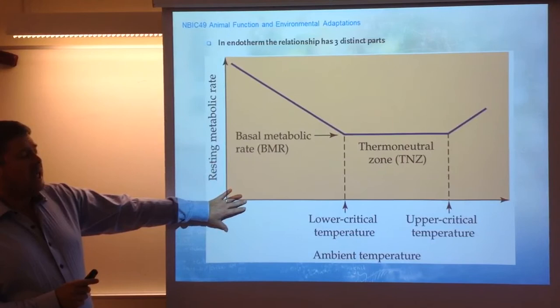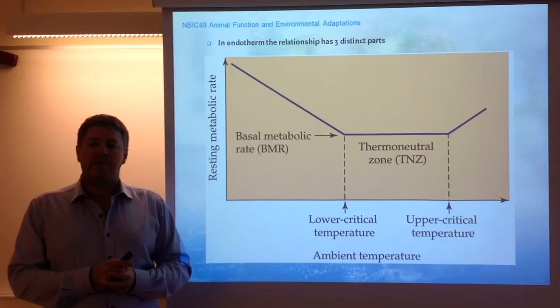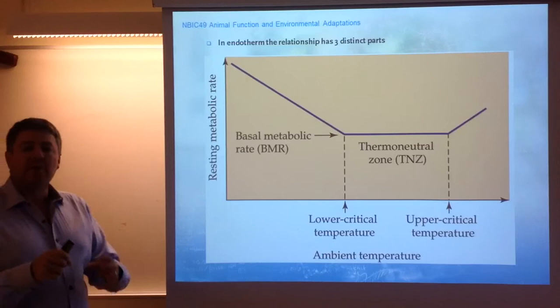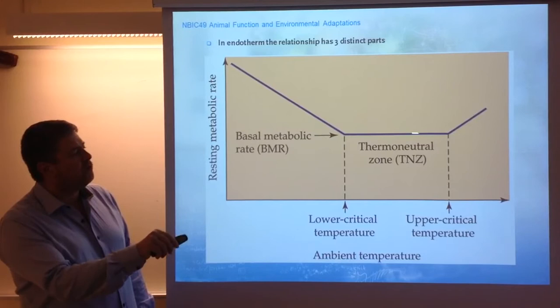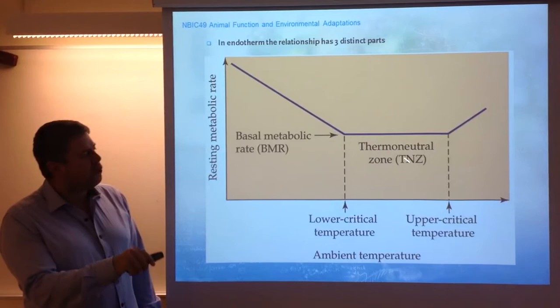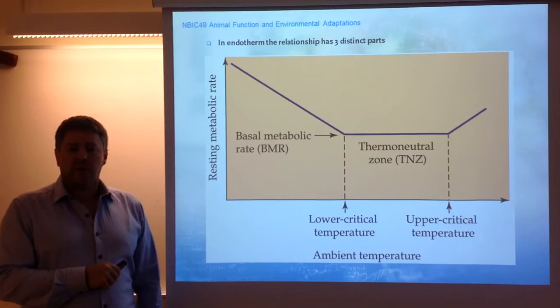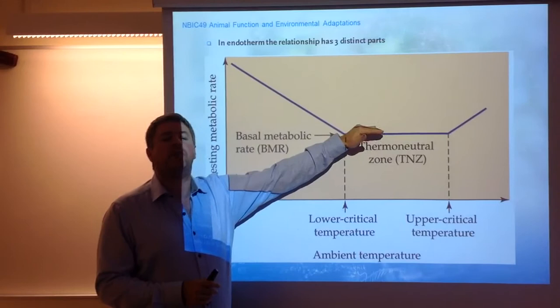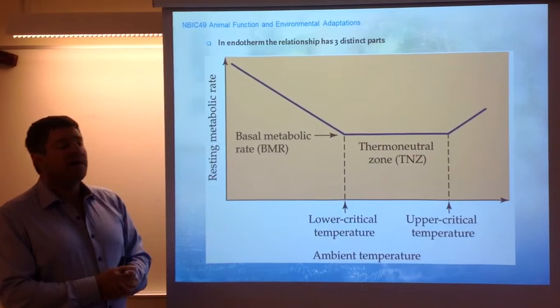Unlike homeotherms or endotherms that produce their own body heat, animals that actually regulate body temperature show a completely different relationship between ambient temperature and metabolic rate. For animals that control their own body temperature, there is a region called the thermoneutral zone — the range of ambient temperatures at which resting metabolism is lowest. Above an upper critical temperature or below a lower critical temperature, metabolism increases. So in endotherms, you have a thermoneutral zone in which metabolism is constant, and as ambient temperatures go lower or higher, there is an increase in metabolism.